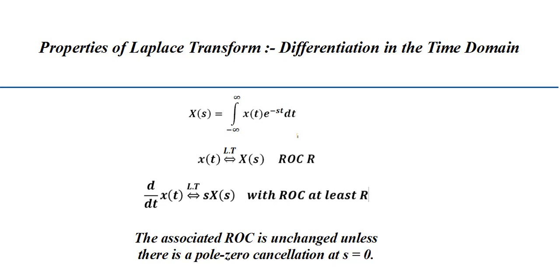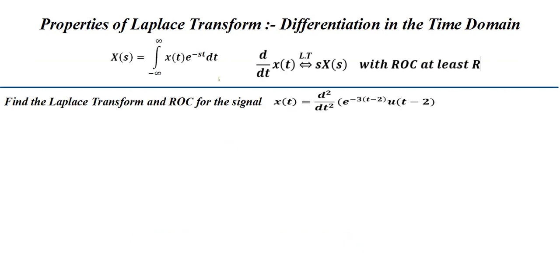The pole-zero cancellation occurs at s = 0 because we are adding an extra s in the numerator. Sometimes this s can cancel with a denominator s, and only then is there a change in ROC; otherwise the ROC will be the same. We will see some examples.